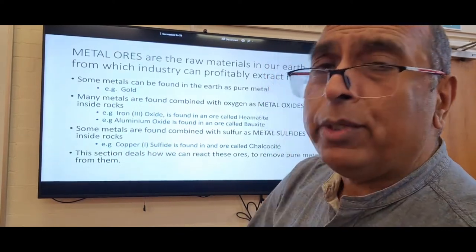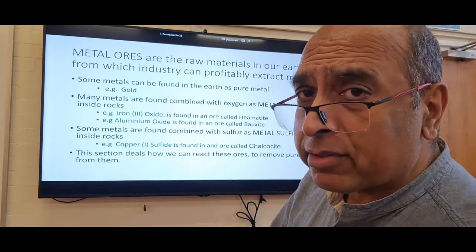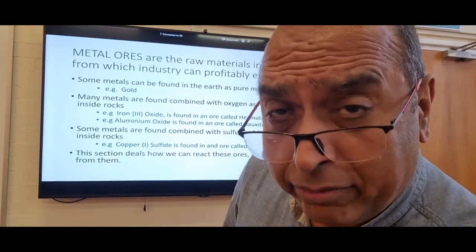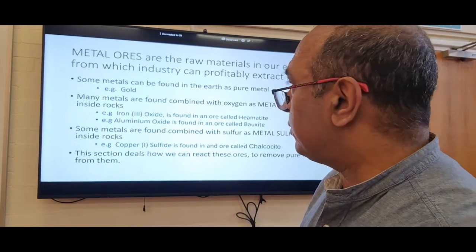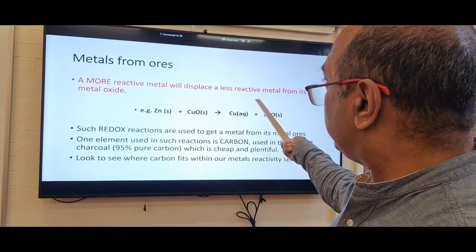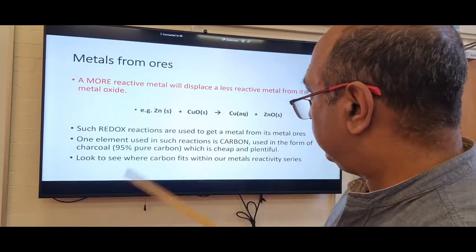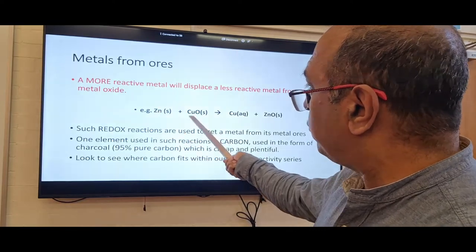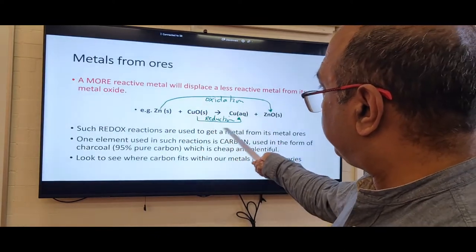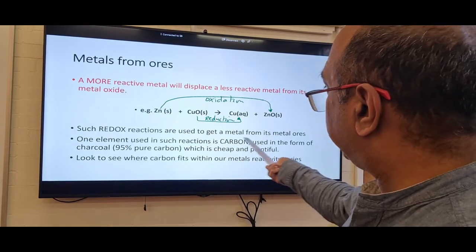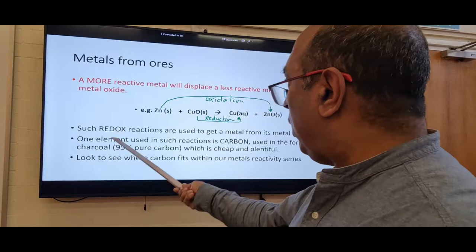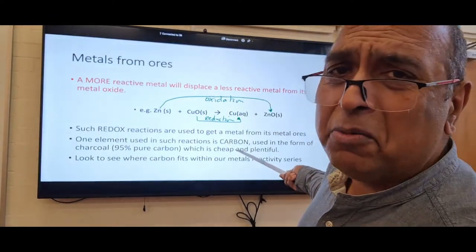We use reactions — specifically displacement reactions — to get metals out of their ores, and that's why this is in this section. The kind of reaction that happens is redox: a more reactive metal will displace a less reactive metal from its metal oxide. For example, zinc displaces copper from copper oxide — zinc gets oxidized, copper oxide gets reduced. Such redox reactions can be used to get a metal from its ores. One element used is carbon.